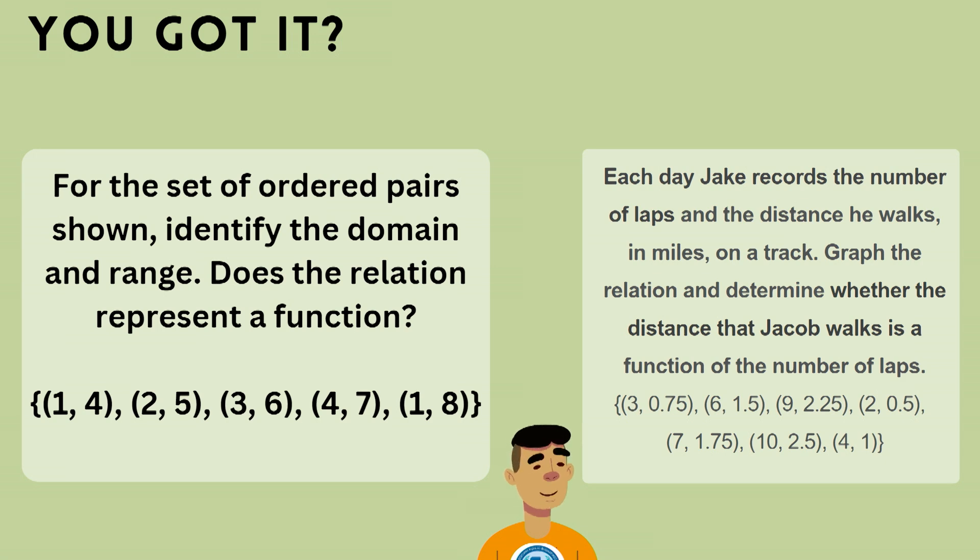Each day, Jake records the number of laps and the distance he walks in miles on a track. Graph the relation and determine whether the distance that Jake walks is a function of the number of laps. We have (3,0.75), (6,1.5), (9,2.25), (2,0.5), (7,1.75), (10,2.5), and (4,1).